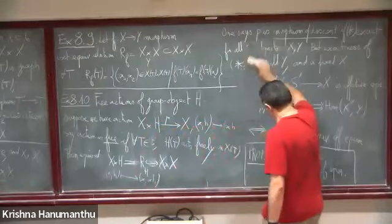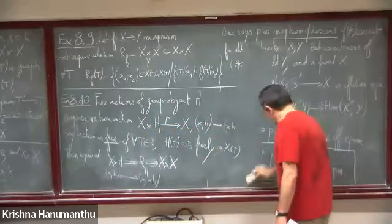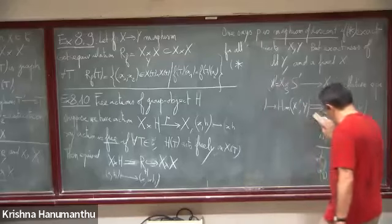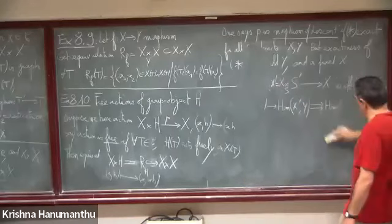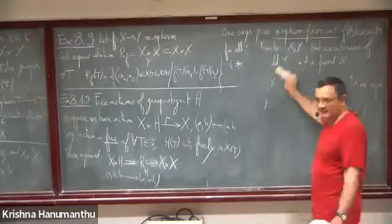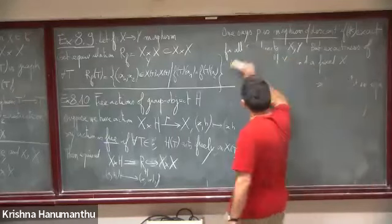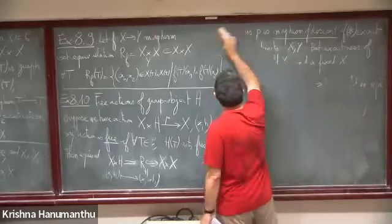So a morphism of descent is the same thing as a universal effective epimorphism. Now we get to the heart of the topic.